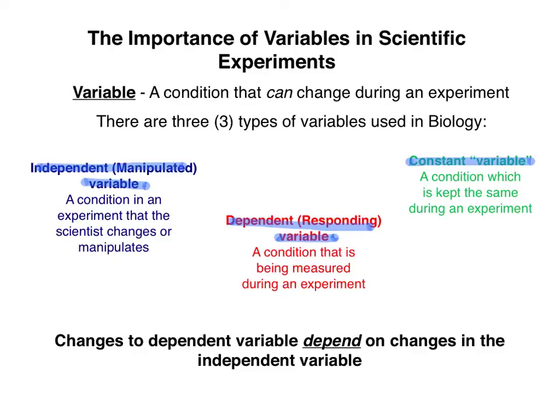You know that the independent variable is a variable that you change or manipulate during the experiment. In fact, your textbook refers to the independent variable as the manipulated variable. The dependent variable, or the responding variable according to your book, is a condition that is being measured during an experiment — it's going to respond to changes in the independent variable. A change to the dependent variable depends — hint, hint — on a change to the independent variable.